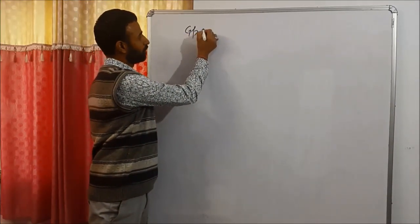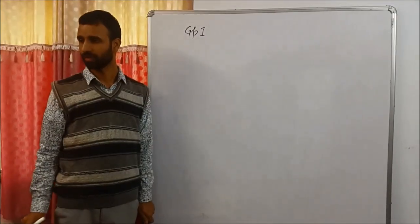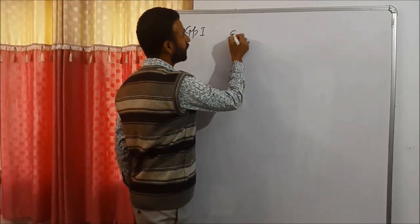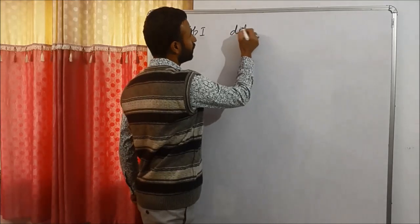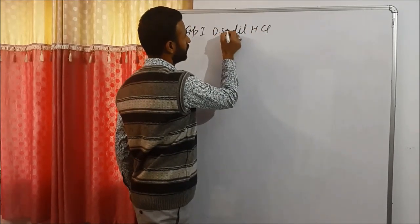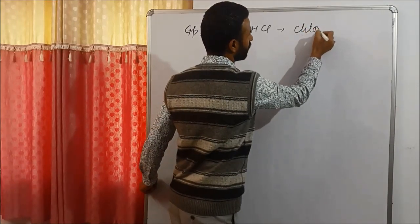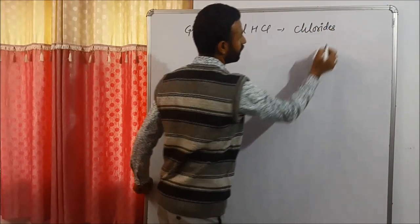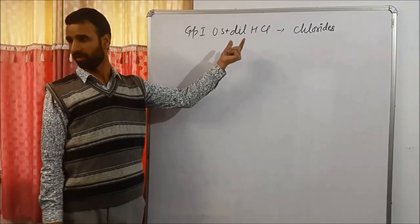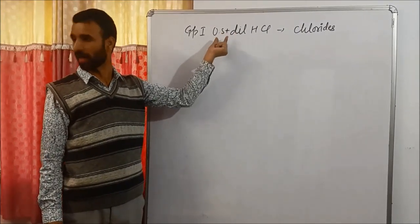In group 1, what do we add? Dilute HCl. On adding dilute HCl to the original solution, there is a formation of chlorides. So, chlorides are precipitated by dilute HCl in group 1.